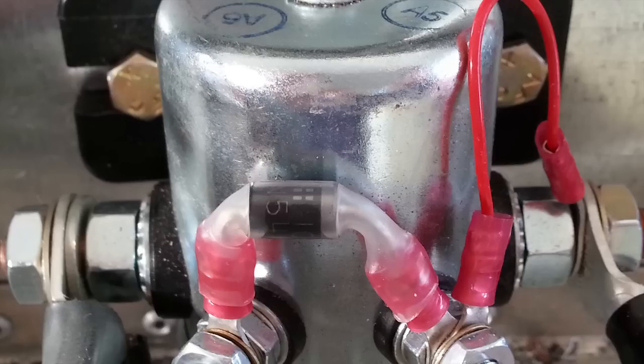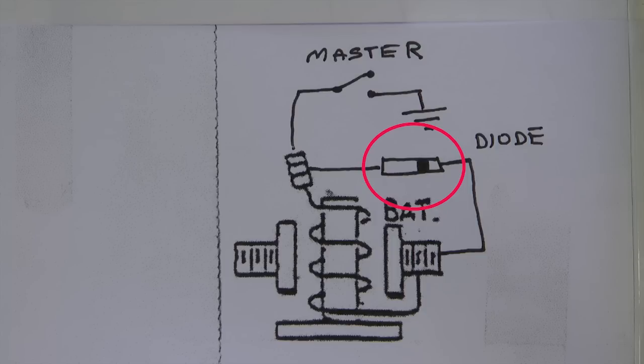Builders often ask, where does the diode go? The answer: electrically wired across the coil.